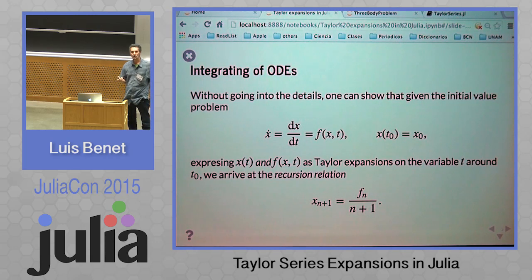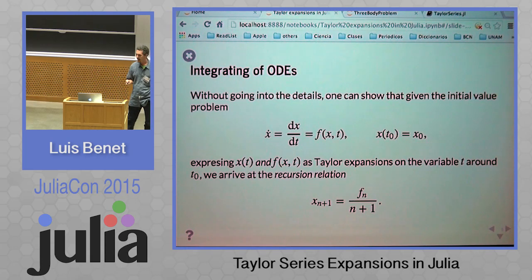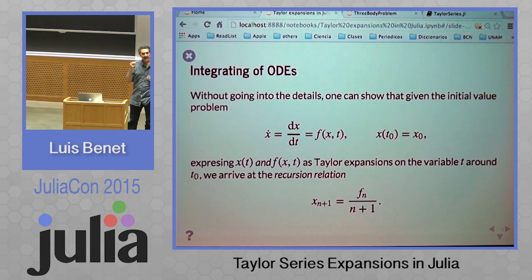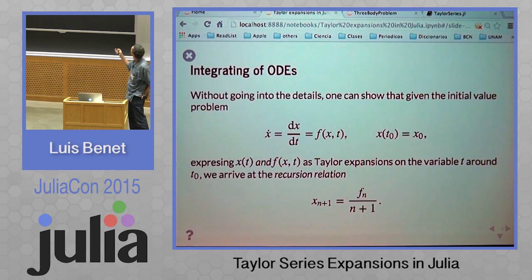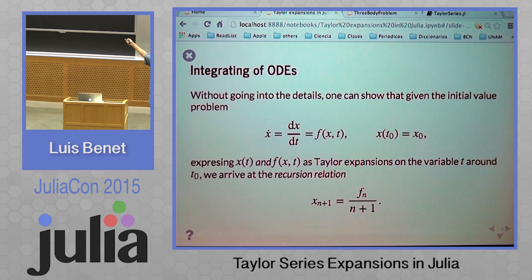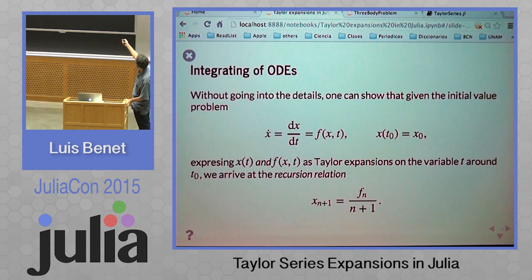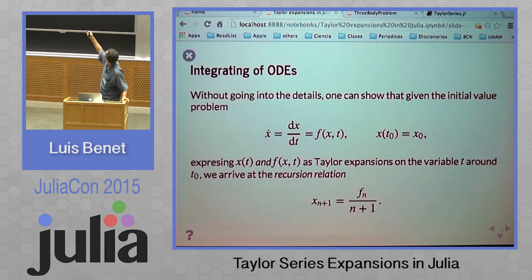Now, the kind of applications we have in mind: we care about integrating ordinary differential equations as precisely as possible. The whole idea is that if you expand your dependent variable as a Taylor expansion and also the right-hand side of your equation, you equate independent terms and end up with a recurrence equation. The idea of integrating any ODE is to end up with these kinds of recurrence relations.